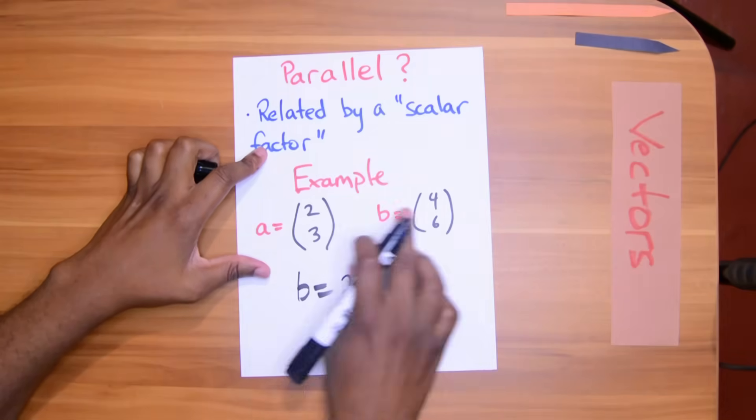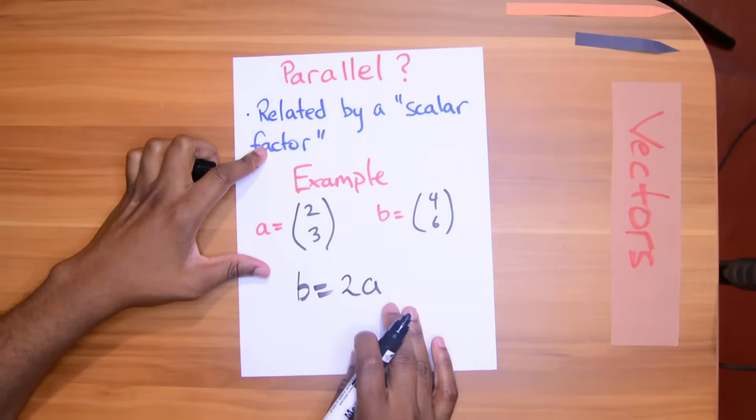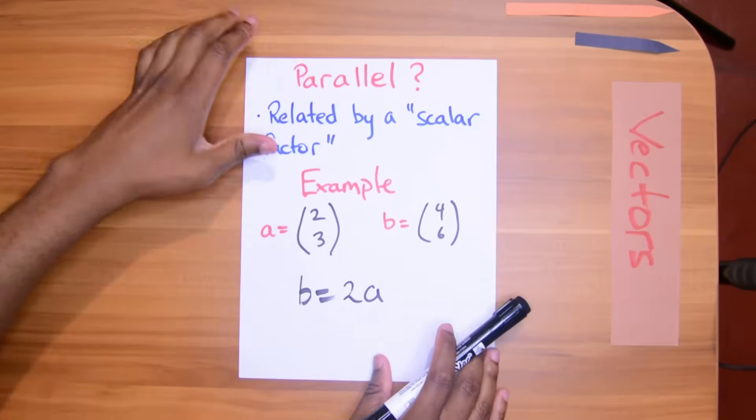And this scalar factor could be a fraction as well. So after you've written this, you will write B is related to A by the scalar factor of 2 and you will collect 2 marks.